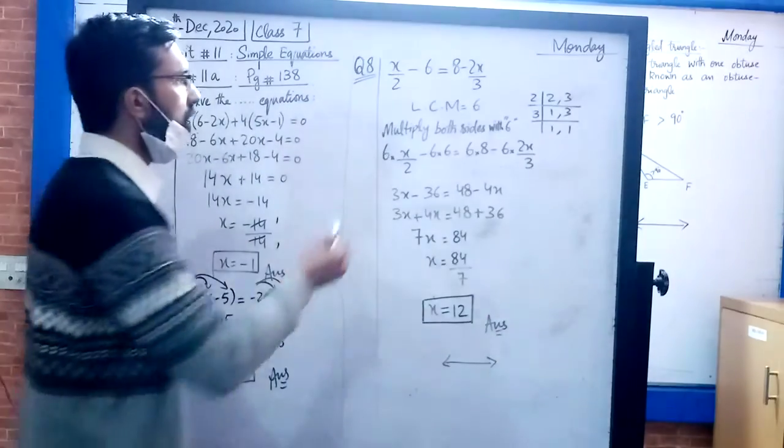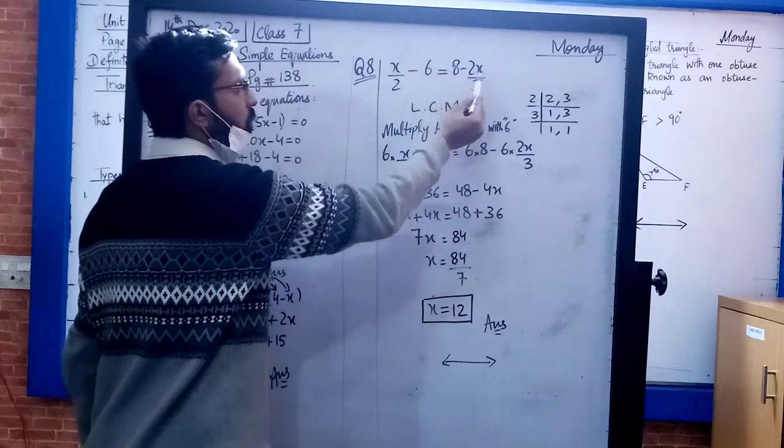Next, question number 8: x over 2 minus x equals 8 minus 2x divided by 3.